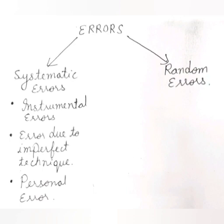First of all let us discuss about systematic error. As the name suggests, it is due to a problem in the system. The system comprises many things — the instrument you are using, the apparatus you are using, and even the experimenter performing the experiment. Any problem in any part of the system that causes a mistake in measurement is known as systematic error.